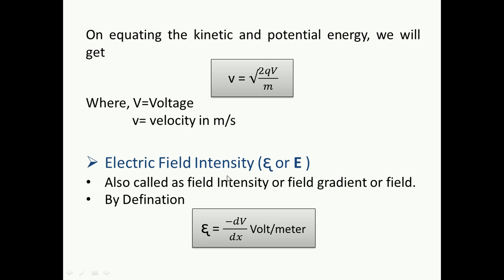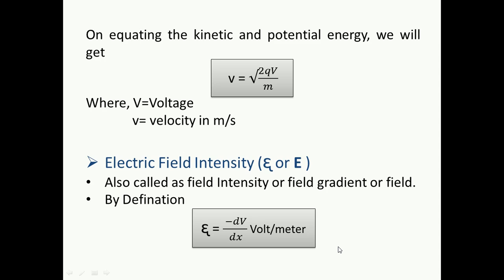Next topic is electric field intensity. It is also written as bold capital E in some notations, so be aware of both. It is also called field intensity, field gradient, or simply field. By definition, electric field intensity E equals applied voltage divided by distance or spacing. This is a very important formula — many competitive examinations directly ask questions on this.